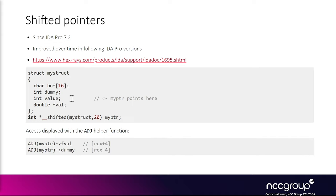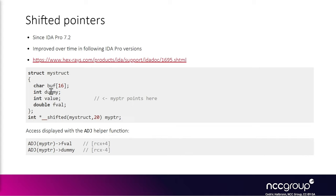Inside IDA we can define a variable to be of type my_pointer, and IDA would know not only that it's a pointer to an int, but also that it is at offset 20 into my_struct, effectively pointing to the value element. So if the RCX register holds the my_pointer shifted pointer and there is an access to RCX+4, IDA knows it's 4 bytes after value — accessing fval. Similarly, RCX-4 accesses the dummy integer.